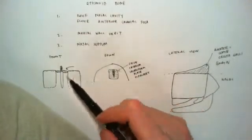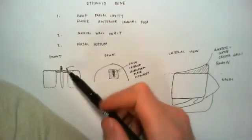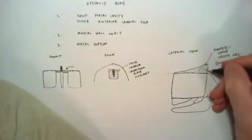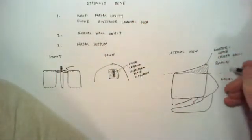So that's how it's got its name, the crista galli. So you've got the cribriform plate going across, and you've got the crista galli sitting on top of it, and the crista galli, in the anterior cranial fossa, it is the attachment for the falx cerebri.